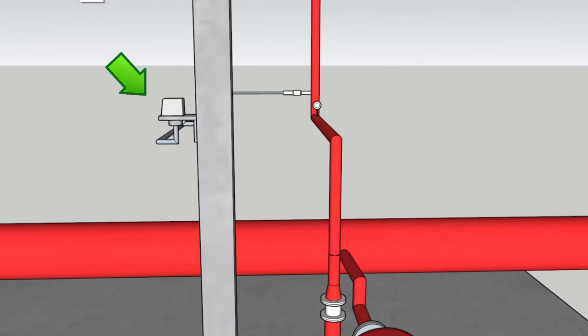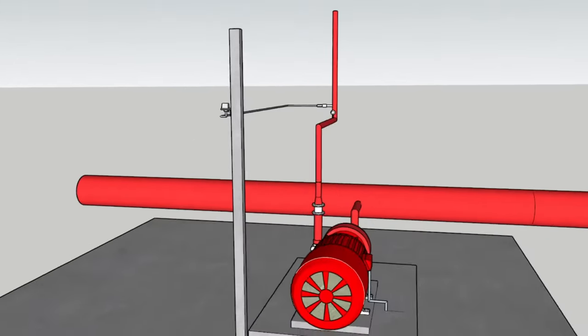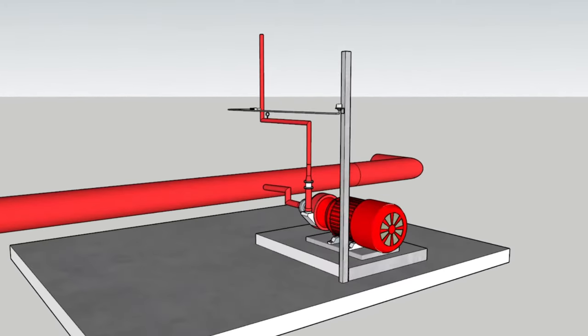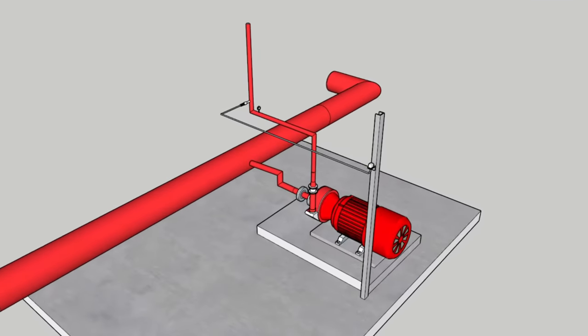A pressure switch operates an electrical contact when a certain set fluid pressure has been reached on its input. The switch may be designed to make contact either on pressure rise or on pressure fall.